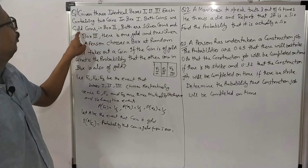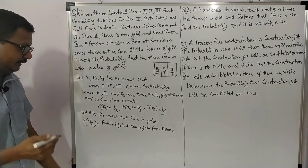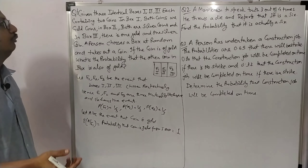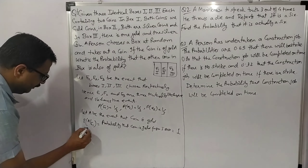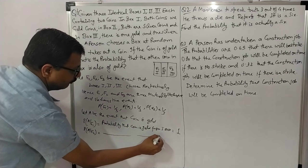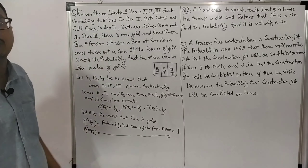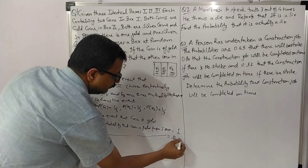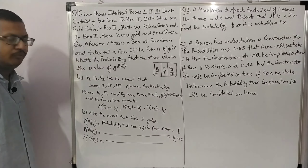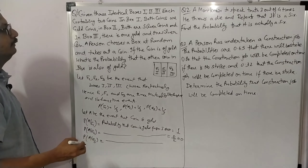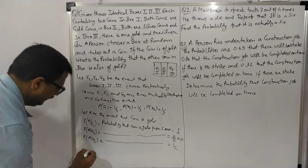In the first box both coins are gold, so if you take out a coin it will be gold — P(A|E1) = 1. In the second box both coins are silver, so P(A|E2) = 0. And P(A|E3), the probability that the coin is gold from the third box, is 1/2.